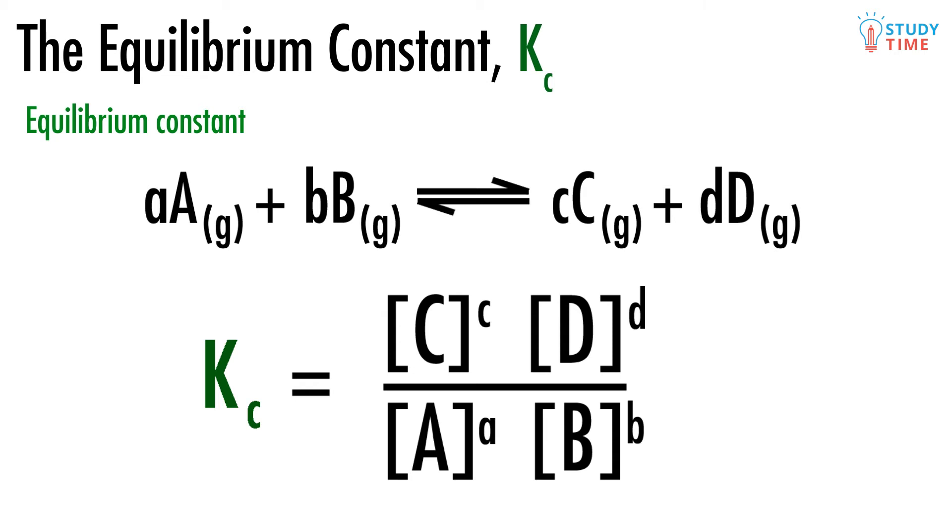What about those powers? If you look again at the original reaction, you'll see that the small letters represent how many moles of each chemical we have present. So we need to raise those concentrations to the power of how many moles of those chemicals we've got. 2 moles of A means A squared. 3 moles of A means A cubed, and so on.